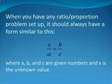Once you have any ratio proportion problem set up, it should always have a form similar to this: X divided by A is equal to B divided by C, where A, B, and C are given numbers and X is the unknown value.